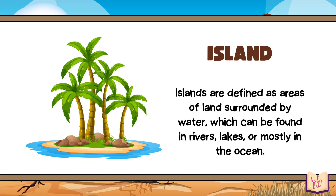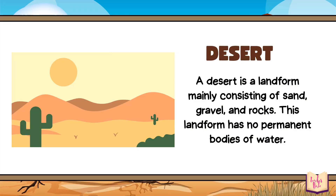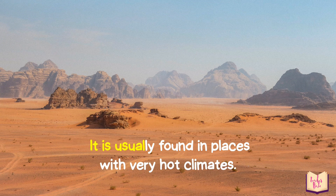Islands are defined as areas of land surrounded by water, which can be found in rivers, lakes, or mostly in the ocean. Did you know? The Philippines is made up of more than 7,000 islands! We also have desert. A desert is a landform mainly consisting of sand, gravel, and rocks. This landform has no permanent bodies of water and is usually found in places with very hot climates.